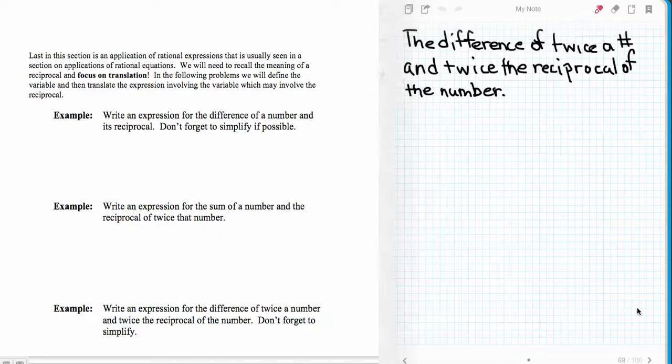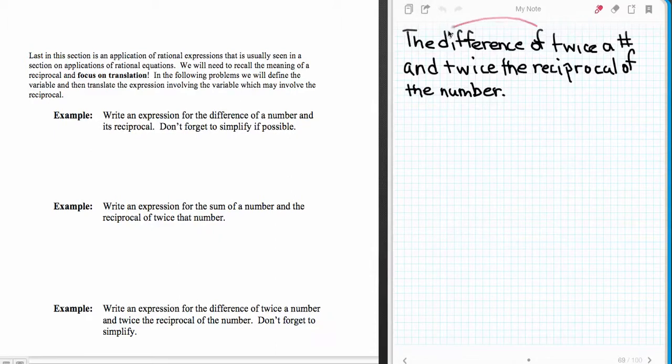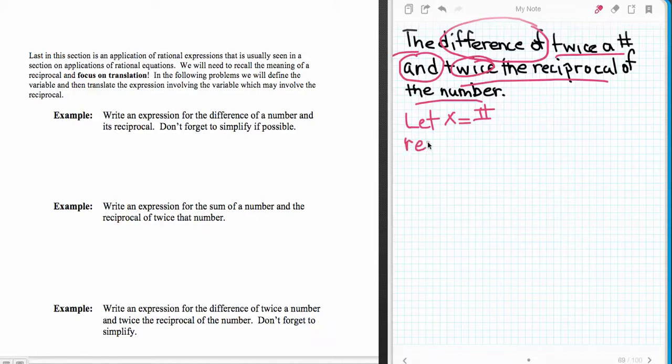Moving on to the last problem. We have the difference of twice a number and twice the reciprocal of the number. The first thing I'm going to do is let x be my number. It says twice a number and twice the reciprocal of the number. So I really am dealing with the reciprocal this time, so I will have 1 over x.